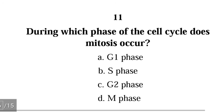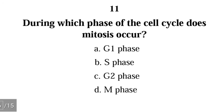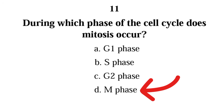Question 11: During which phase of the cell cycle does mitosis occur? A) G1 phase, B) S phase, C) G2 phase, D) M phase. The correct answer is D) M phase. Mitosis occurs during the M phase, which is the cell division phase. The M stands for mitosis or meiosis.